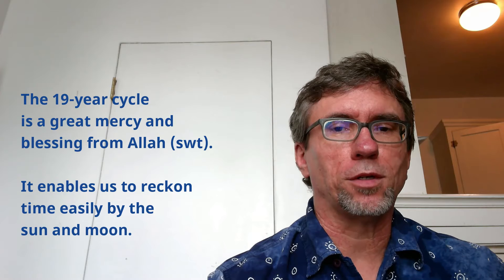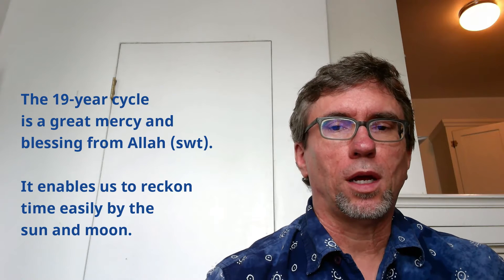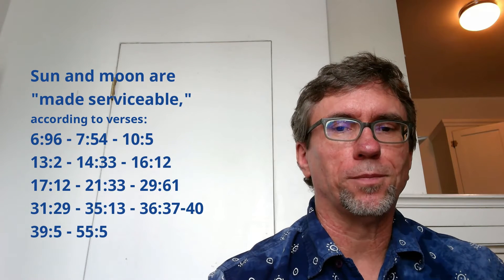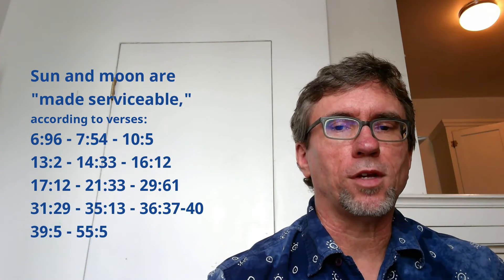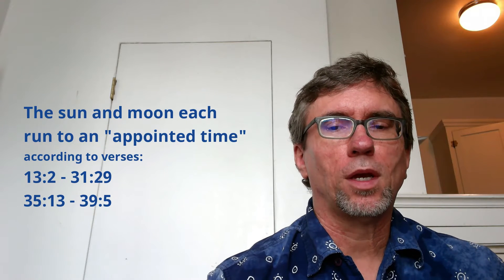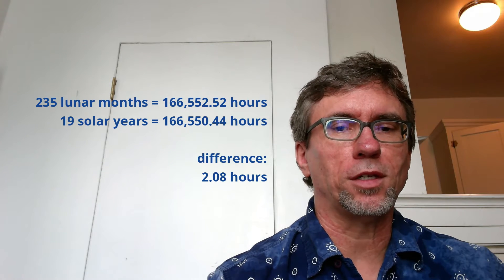The 19-year cycle is this great blessing from Allah. As the Quran says, Allah has made the sun and moon serviceable to humanity. It says the sun and the moon run in courses to an appointed turn, and we see the sun and moon matching up extremely closely at 19 years.